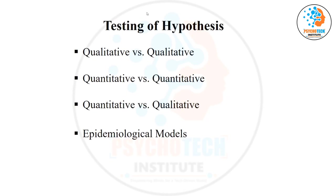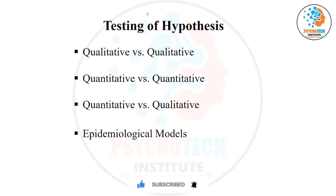If the first variable is qualitative and the second is also qualitative — for example, gender and education level (educated/non-educated) — both are qualitative. The second possibility is both quantitative, like hemoglobin level and BMI. The third possibility is quantitative versus qualitative — for example, hemoglobin level and gender, or hemoglobin level and pregnancy status (pregnant/non-pregnant).